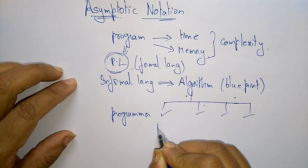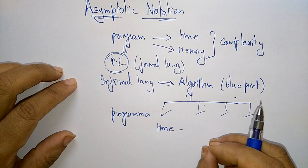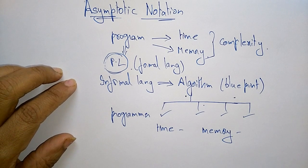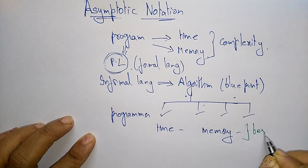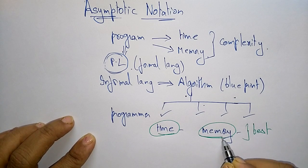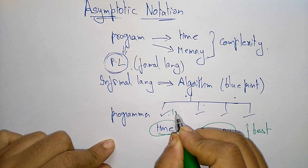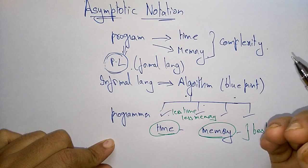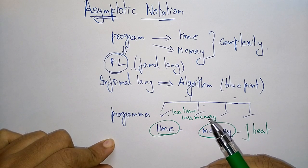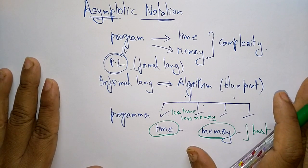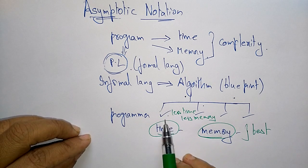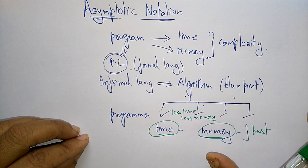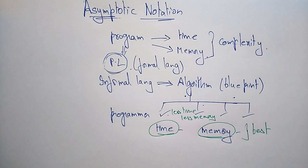How do we determine which algorithm is best? This will be analyzed based on the time it takes to complete the program and the memory it occupies. The best algorithm is chosen based on time and memory. The algorithm which takes less time and less memory is selected as the best algorithm, which is then implemented when writing the program. That is the analysis of algorithm — the goal is to compare algorithms mainly in terms of running time, but also memory requirements and programmer effort.